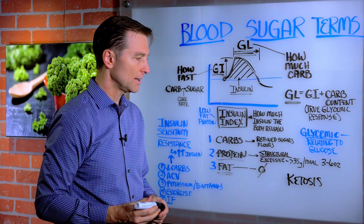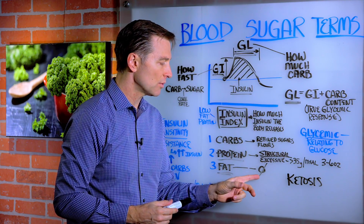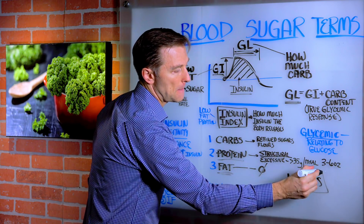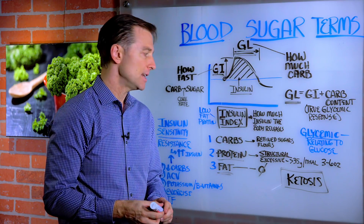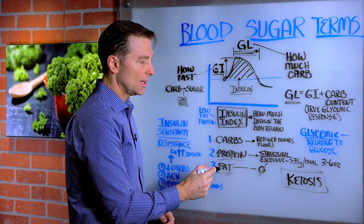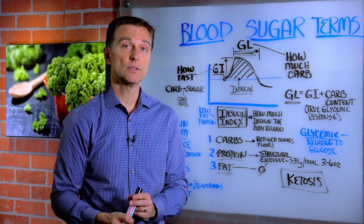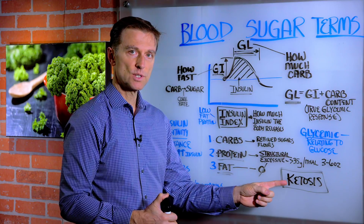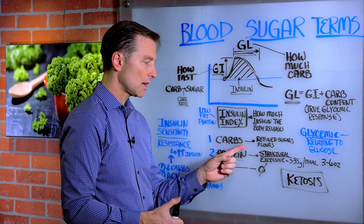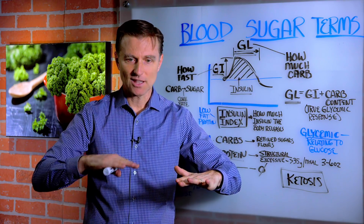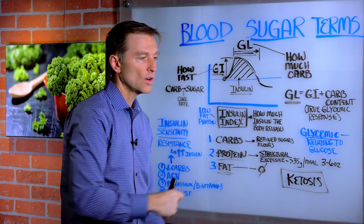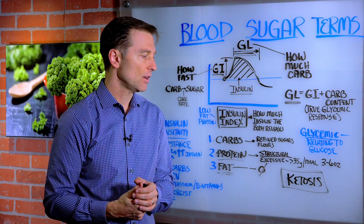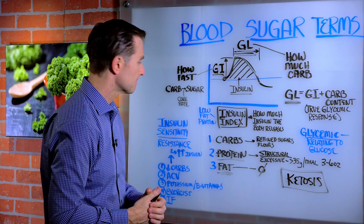Fat has near-zero insulin response — it doesn't spike insulin like carbohydrates. This is the basis of ketosis or a ketogenic diet: very low in carbs, moderate protein, and higher in fat. The purpose of ketosis is to run your body on an alternative fuel source. When you go into ketosis, you're no longer using glucose for fuel — you're using ketones, a byproduct of fat. You get into ketosis by reducing carbs to 20 to 50 grams per day. It's a cleaner fuel source with health benefits including losing belly fat and improved cognitive function.